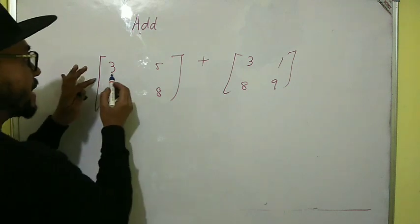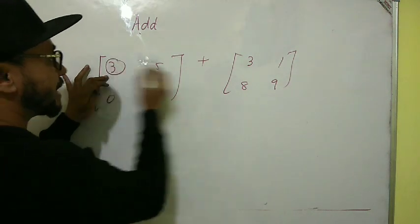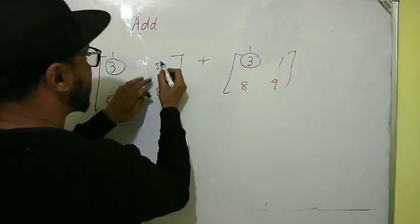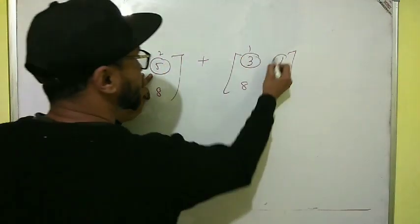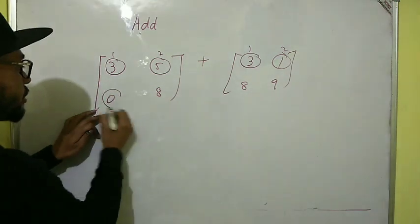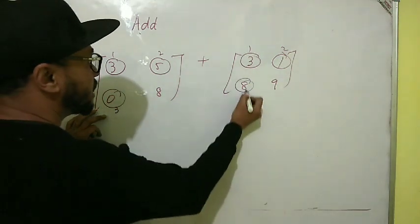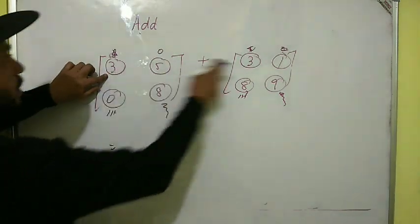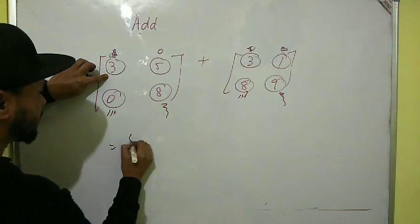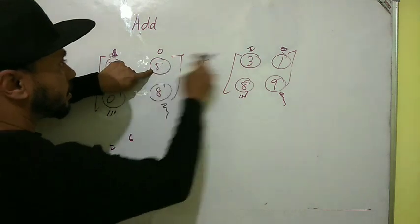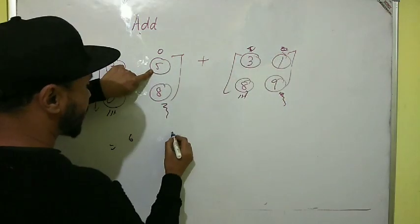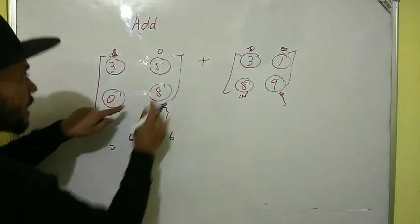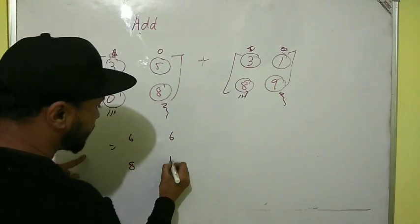We add first element with first: 3 plus 3. Then second element with second: 5 plus 1 is 6. Then third with third: 0 plus 8 is 8. And fourth with fourth: 8 plus 9 is 17.